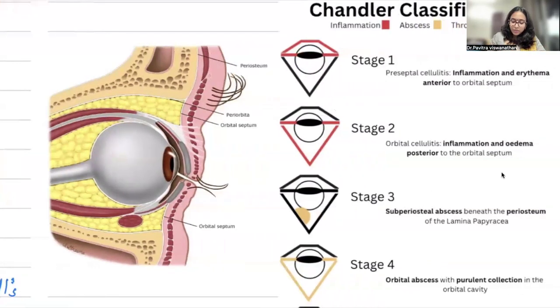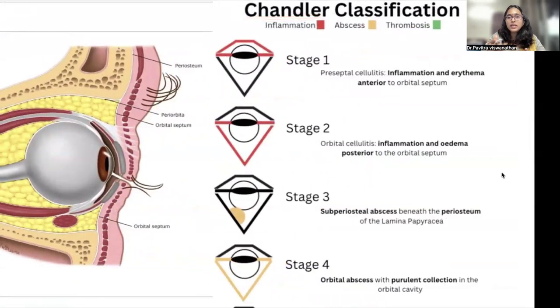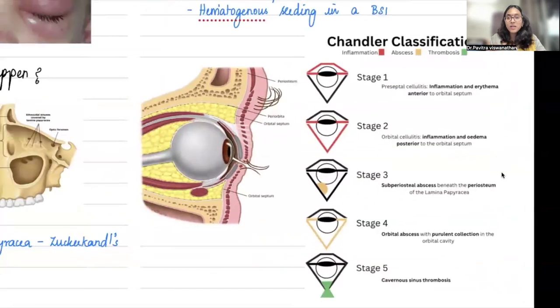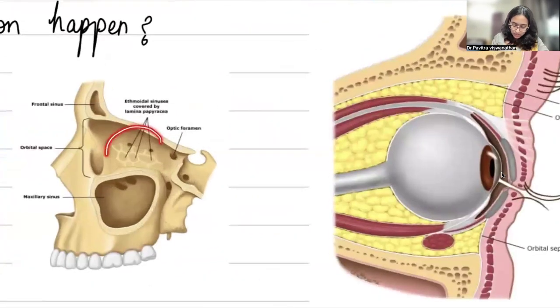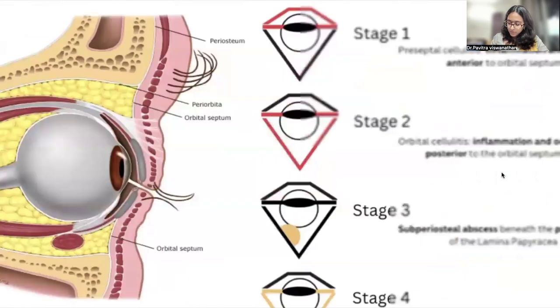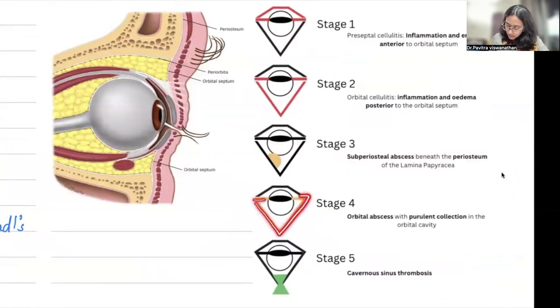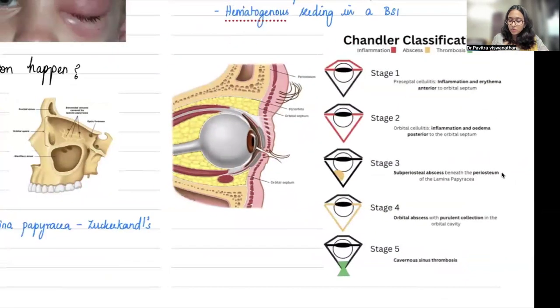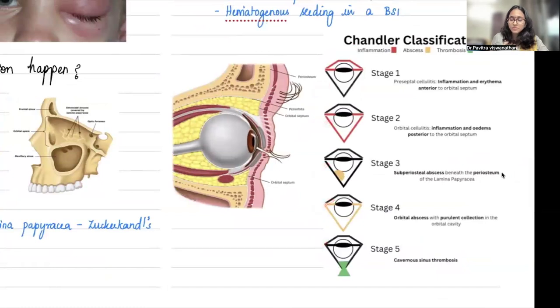Depending upon the extent of infection, Chandler modified a pre-existing classification into five stages. Stage 1 is preseptal cellulitis—in front of the orbital septum. Stage 2 is orbital cellulitis, posterior to the septum. Stage 3 is abscess formation beneath the periosteum of lamina papyracea. Stage 4 is orbital cellulitis with generalized purulent collection in all of the orbital cavity, not just one area. Stage 5 is where it has extended behind into the cavernous sinus. This diagram I felt was very easy to remember.